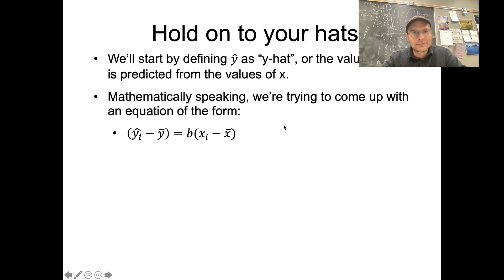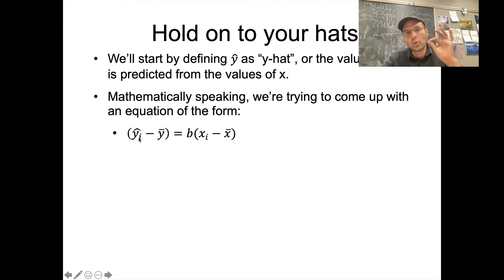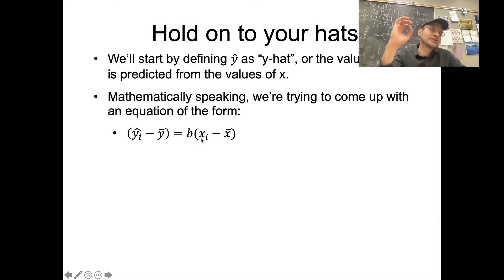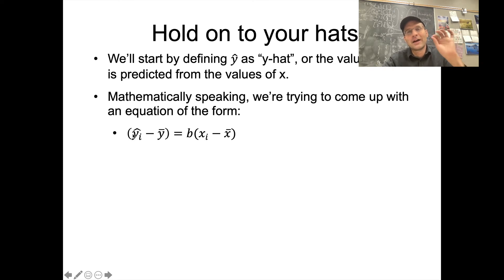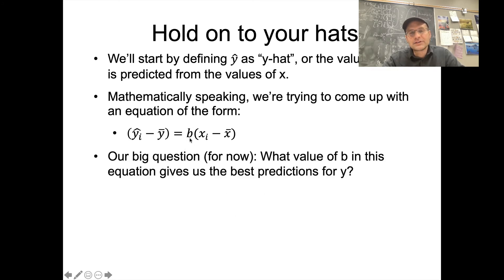Mathematically, because we're using the deviations of x to predict the deviations of y from y's mean, we have an equation of this form: Y-hat sub i minus the Y mean equals B (the slope) times X sub i minus the X mean. These are paired data points — for example, a speaker's height is six foot one (X sub i) and I predict their F0 will be 126 Hz (Y-hat sub i), rather than talking about the observed F0. What we want to figure out is what value of B — what slope — will give us the best predictions for Y-hat.